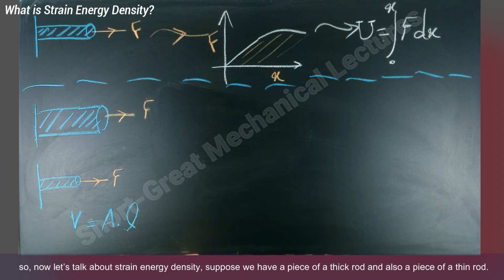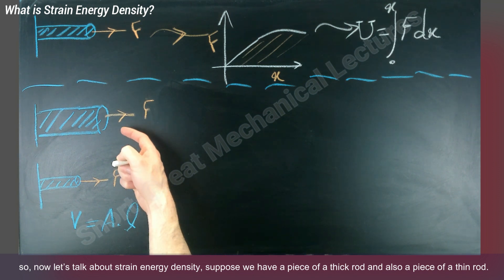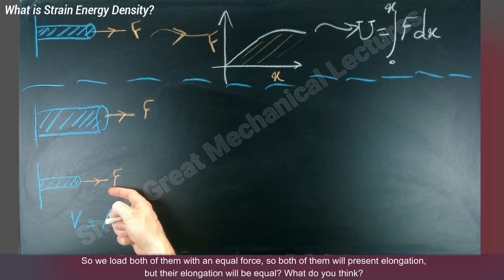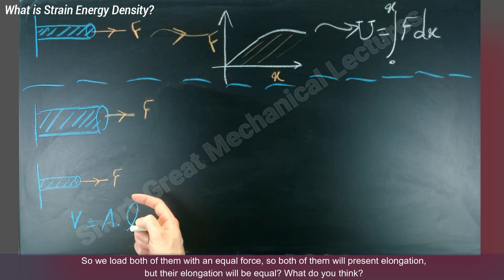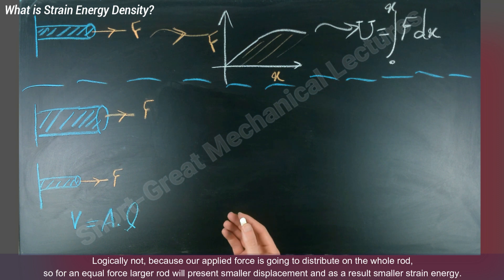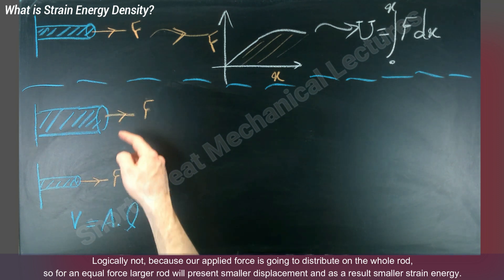So now let's talk about strain energy density. Suppose we have a piece of a thick rod and also a piece of a thin rod. We load both of them with an equal force. Both of them will present elongation, but will their elongation be equal? What do you think? Logically, not.